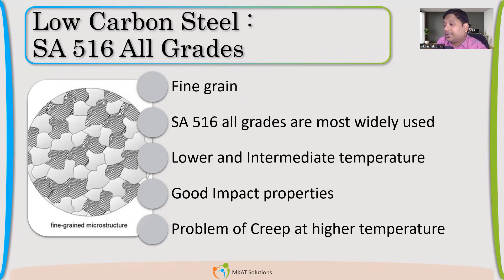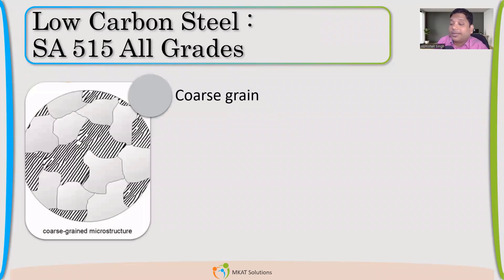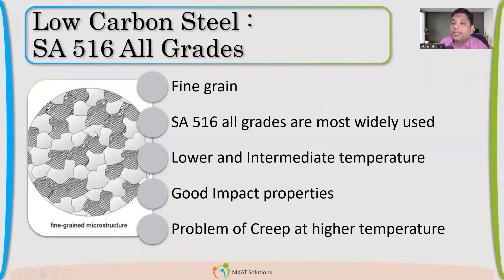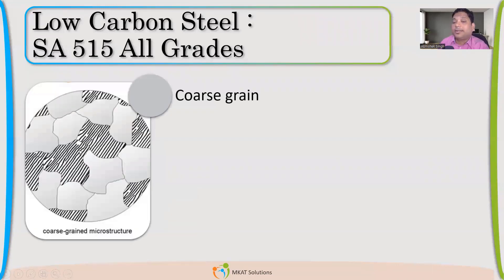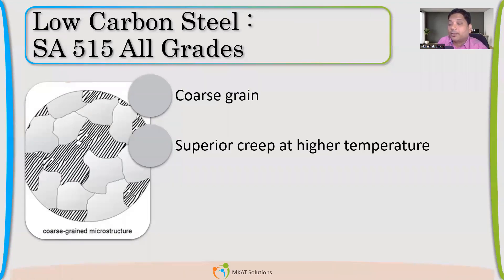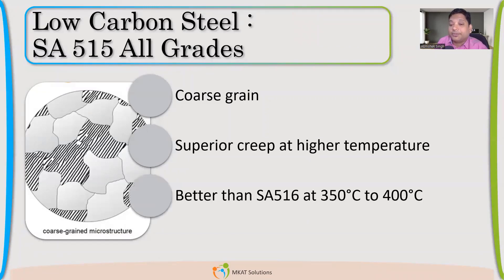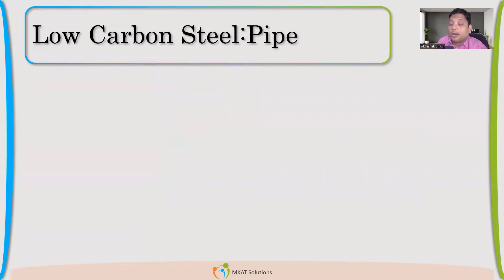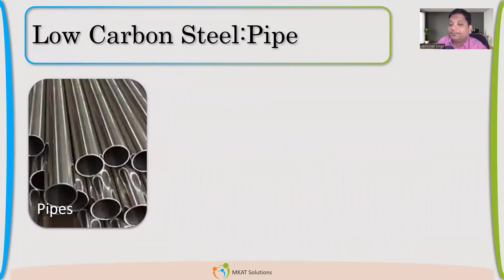The only problem with SA516 is creep at higher temperatures. SA515 is coarse grain. To understand coarse vs fine: in a given area, if you count the grains — fine grain has many more grains in that same area, while coarse grain has fewer, larger grains. Coarse grains perform better at high temperature, which makes SA515 superior in the creep temperature range.